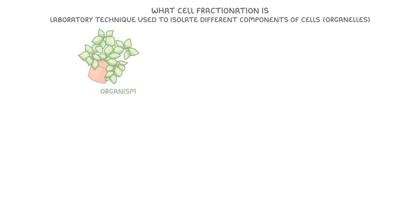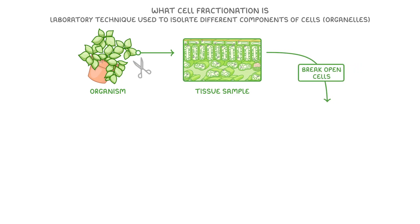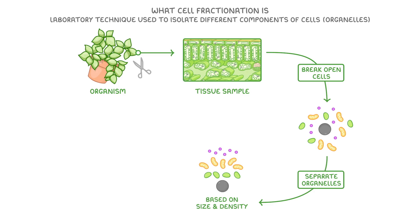The process involves choosing an organism like this plant, taking a tissue sample from it and breaking open all the cells in that tissue sample before then separating all the organelles from those cells based on their size and density.